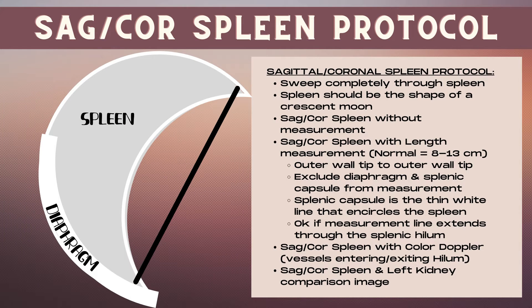Let's review a protocol for a sagittal or coronal image of the spleen. First, sweep completely through the spleen — in this plane the spleen should be the shape of a crescent moon. Take an image of the sagittal or coronal spleen without a measurement, and then one with a length measurement. This length measurement is the most important measurement when imaging the spleen.